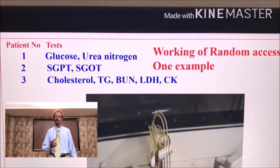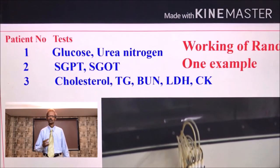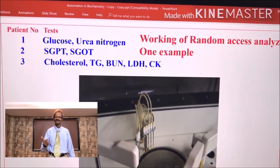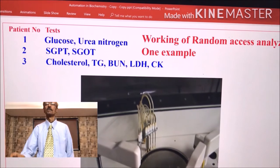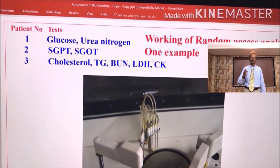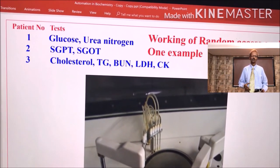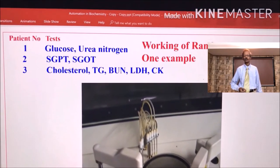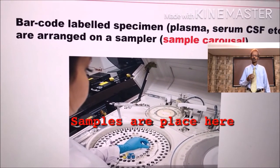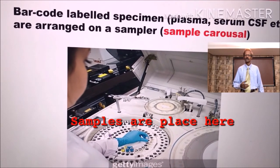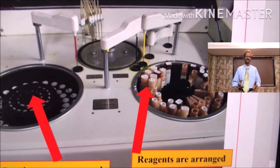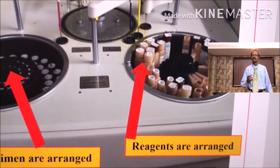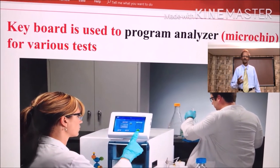Meaning of random access analyzer means this analyzer will finish up all the tests in a random manner. Now let us see how fully automated analyser works. For that matter, we will take an example. Today, for this example, there are three patients. Patient 1 for glucose and urea nitrogen, patient 2 for SGPT and SGOT, and patient 3 for cholesterol, triglycerides, BUN, LDH and CK determinations. Barcode labelled specimens are then arranged on a sampler. Barcoded reagent bottles are arranged on reagent carousel at specific allotted numbers.